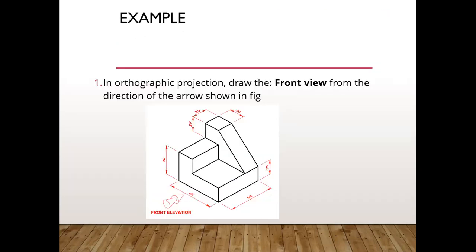Now let us go to a problem. Consider a three-dimensional object — solve the given 3D object using the orthographic projection method. The front view symbol, an arrow mark, is given to indicate which direction we have to view the object. So the front view indicator is given, and now we want to draw the top view and the right side view — totally three views in a 2D plane.